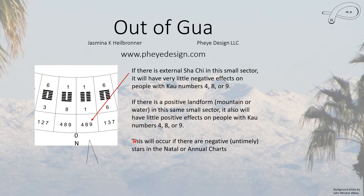So if you have an external Shaqi — let's say your neighbor's roof is pointing right into your main door, and that's what's located here — you can't really plant a tree here because that also blocks good Chi. So then what do you do? Well, if you're lucky enough to have everybody living in the house with Gua number four, eight, or nine, then you don't have to worry about the Shaqi at all.